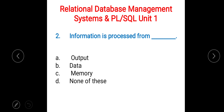Next question: information is processed from dash. Options are: A) output, B) data, C) memory, D) none of these. The right answer is B) data. Information is processed from data — like numbers, characters, and things we can input as data into a system.